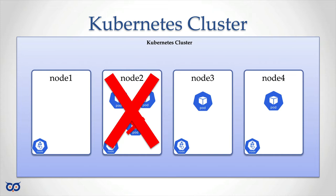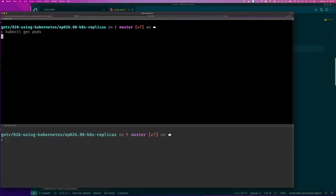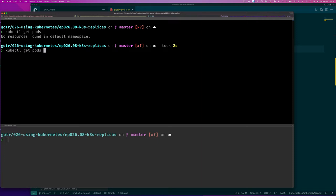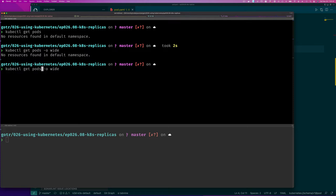Now you see why a replica set needs the number of pods you want to keep running. It also needs the specification in its template for how to create pods, because if it needs to recreate those pods it needs to know which image to use. The information we use in a pod is exactly the same information we put in the replica set template. And the selector — as mentioned — is so it can identify the pods it's responsible for.